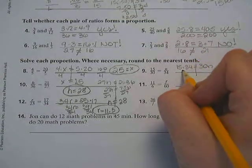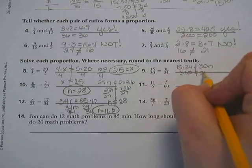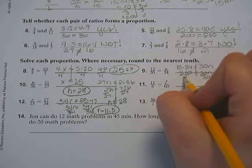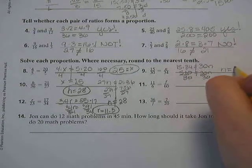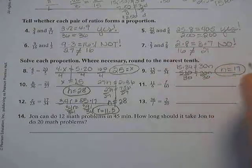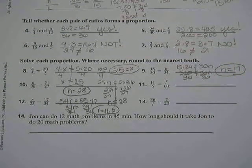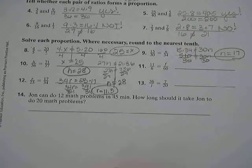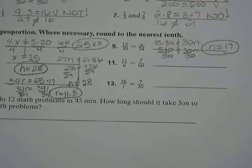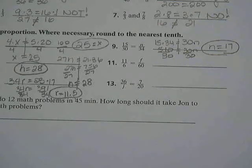All right, number 9. 15 times 34 equals 30N. 15 times 34 is 510. So we're going to divide each side by 30. N equals 17. You want me to slow down a little? Okay. Sorry, you'll just get so excited because you'll just realize you'll do the whole paper. And you're like, oh, I just did this whole thing all by myself.